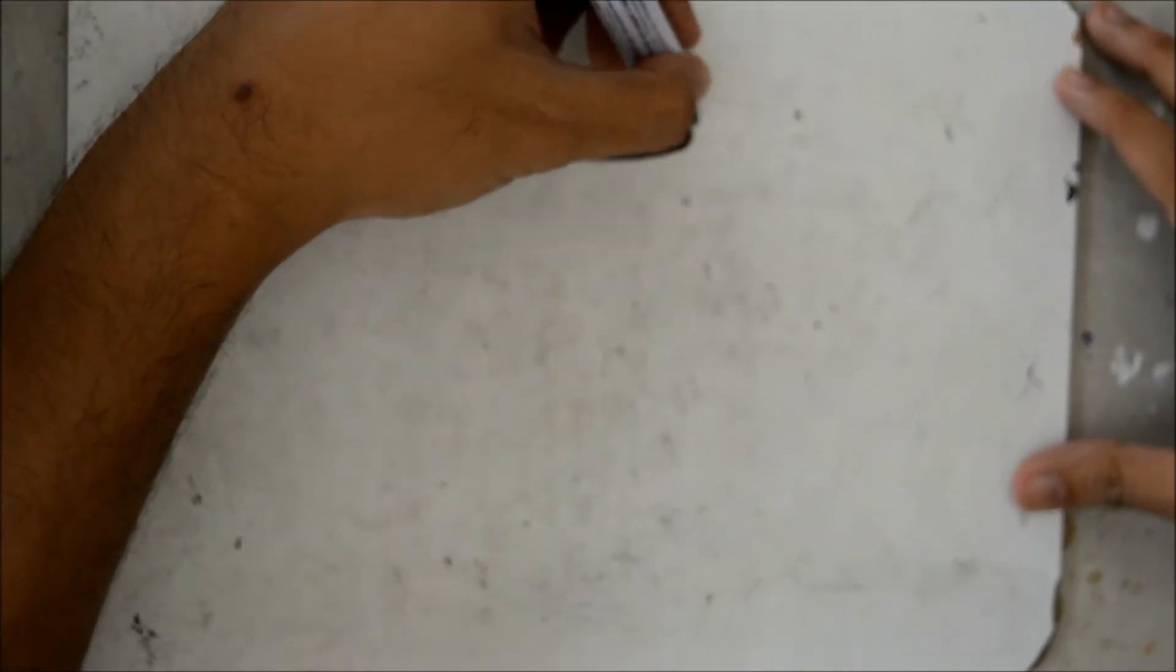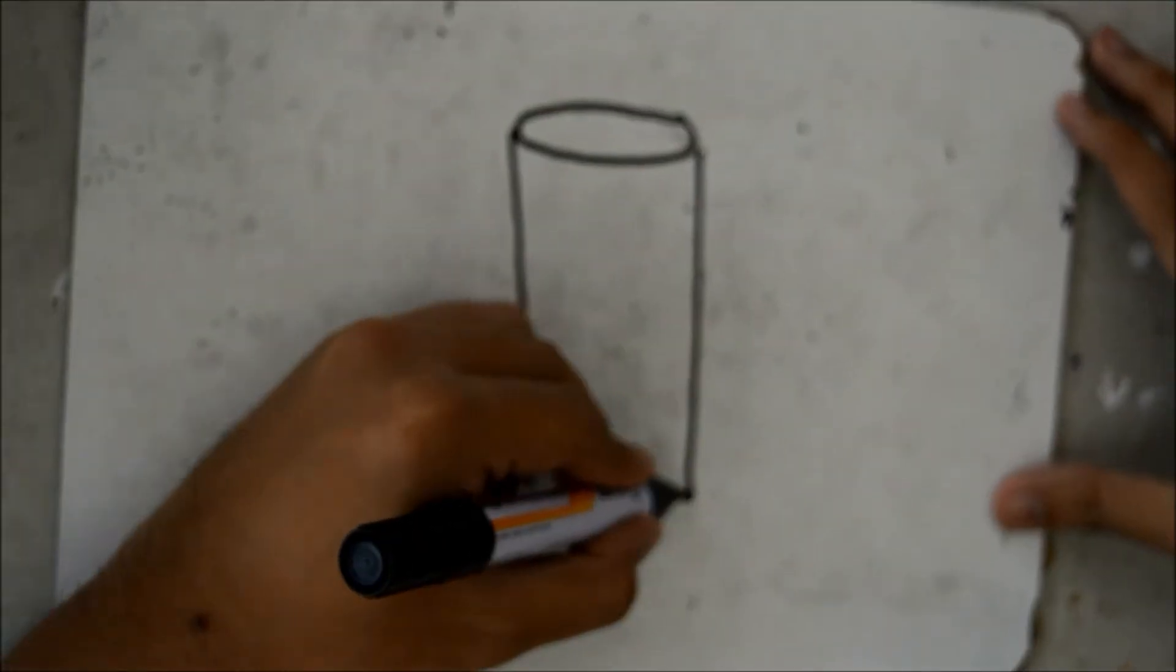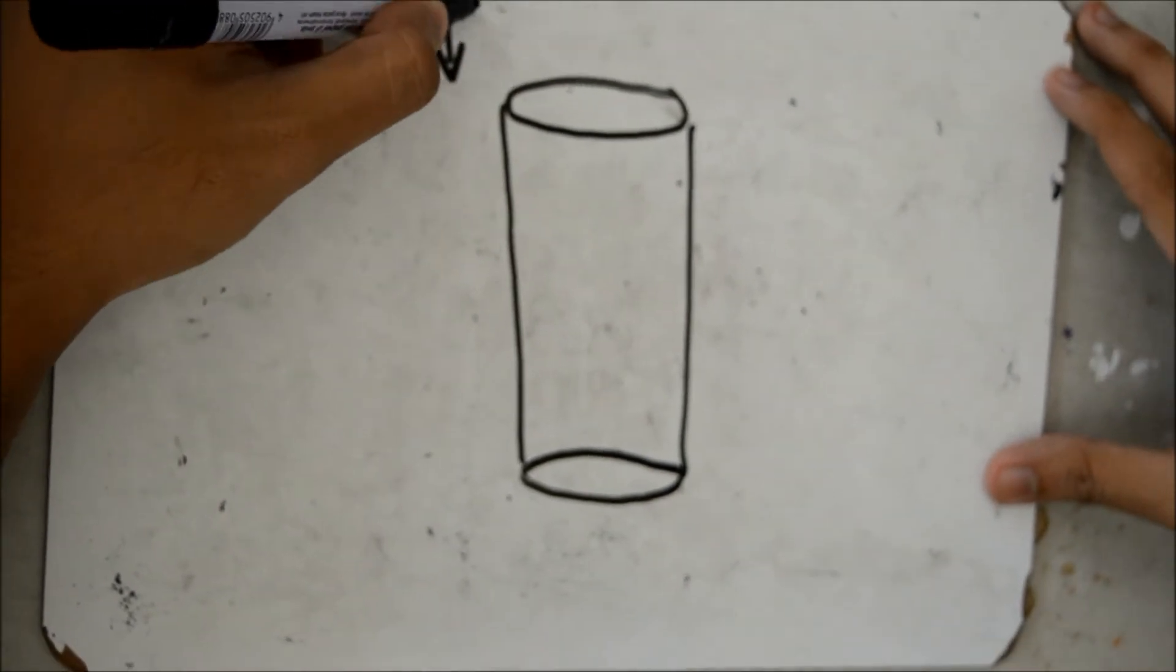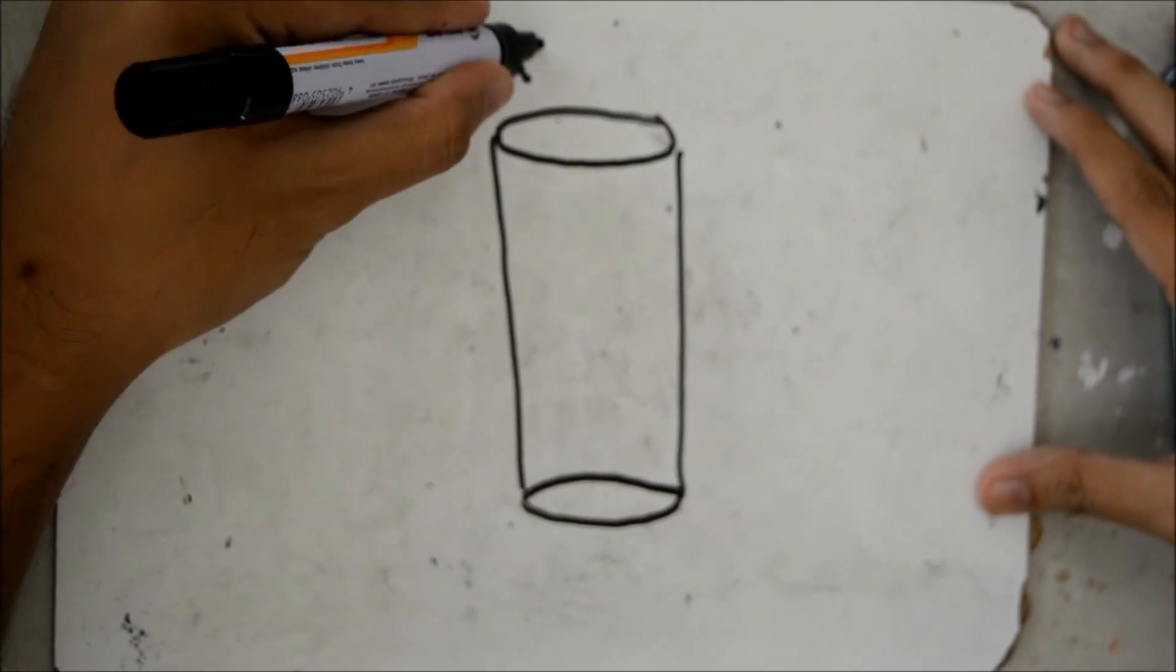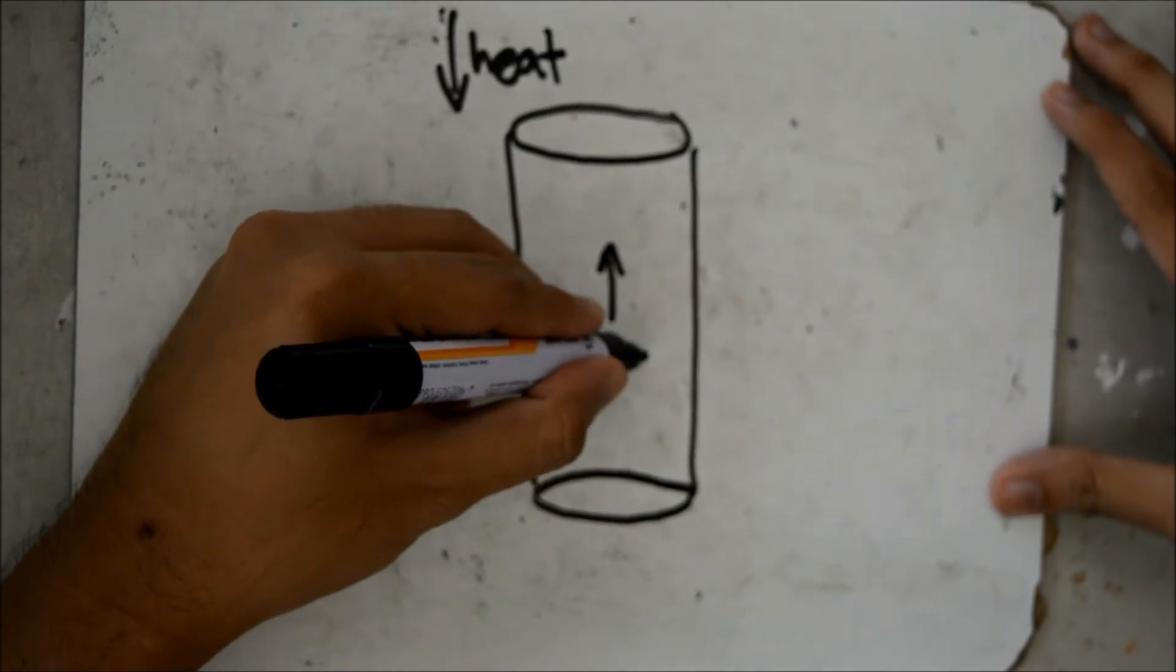The tea bag rocket will show that when you light the tea bag on fire from the top, it will take off into the air. That happens because as the tea bag is burning, all the air inside heats up so it expands.